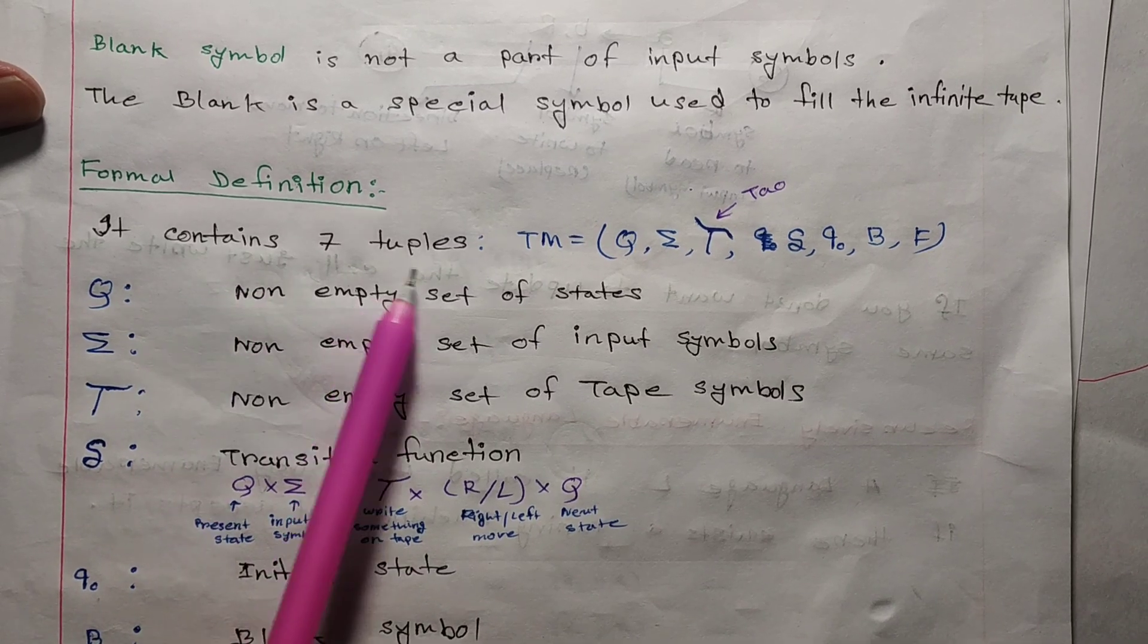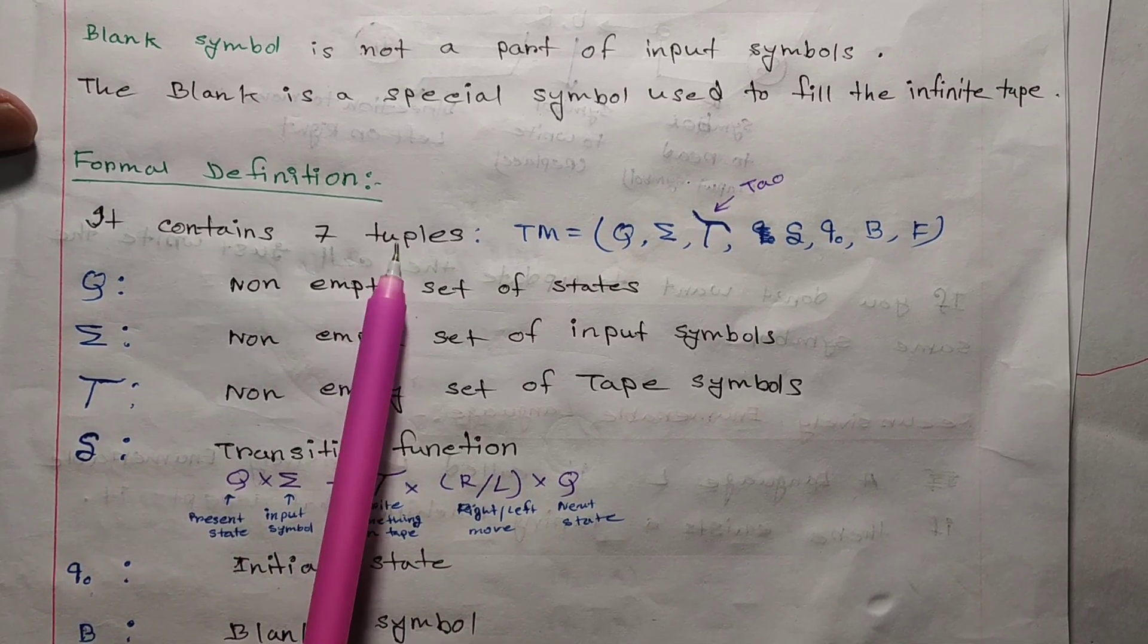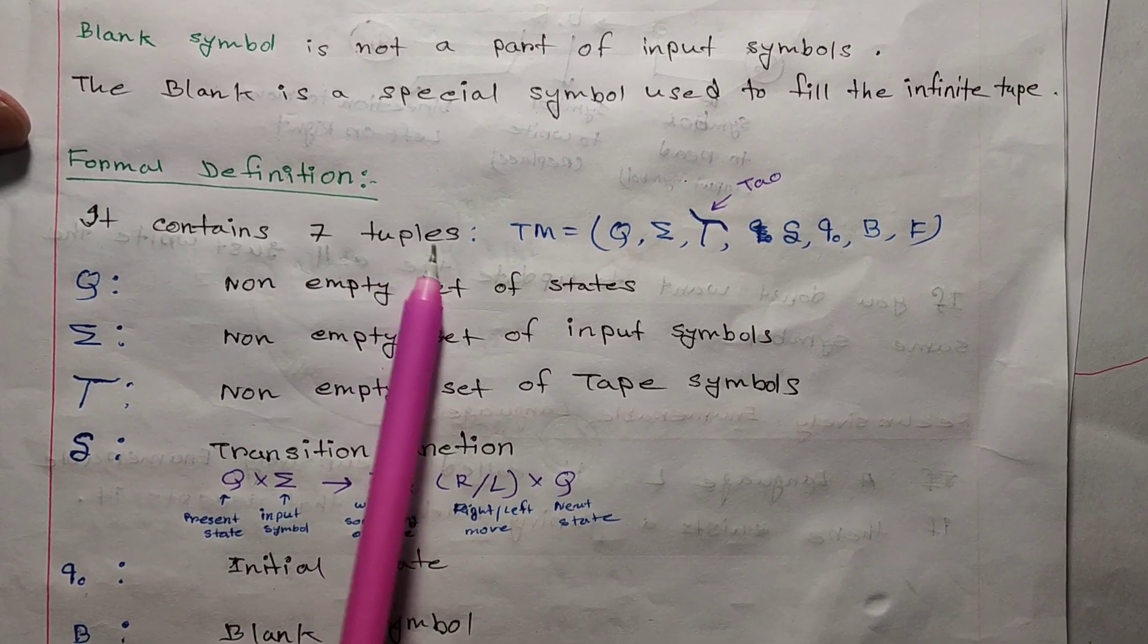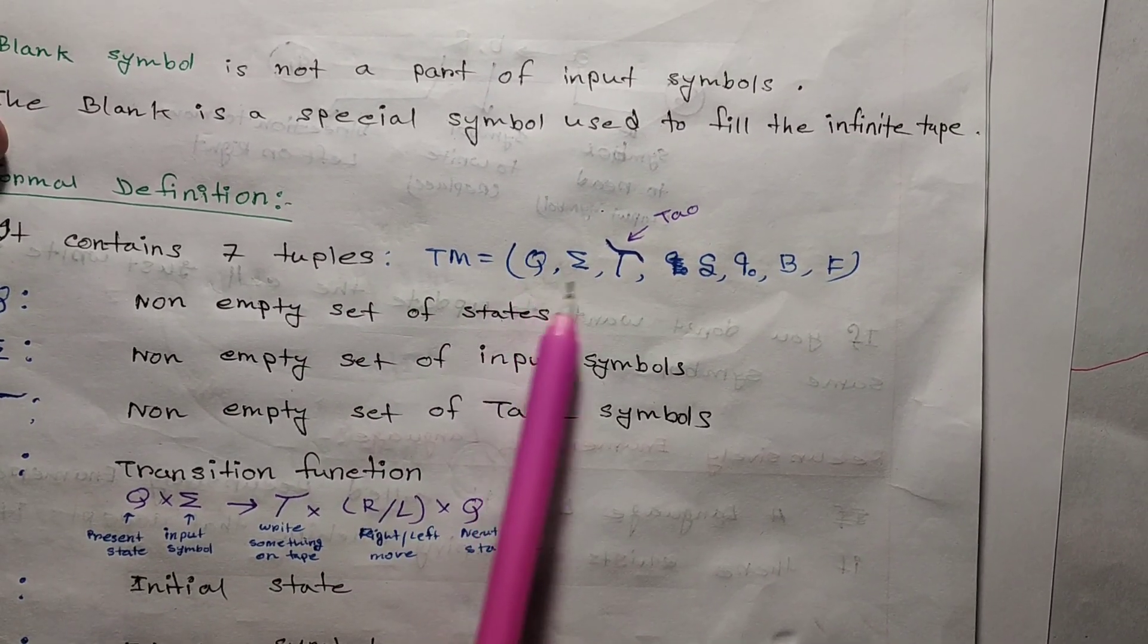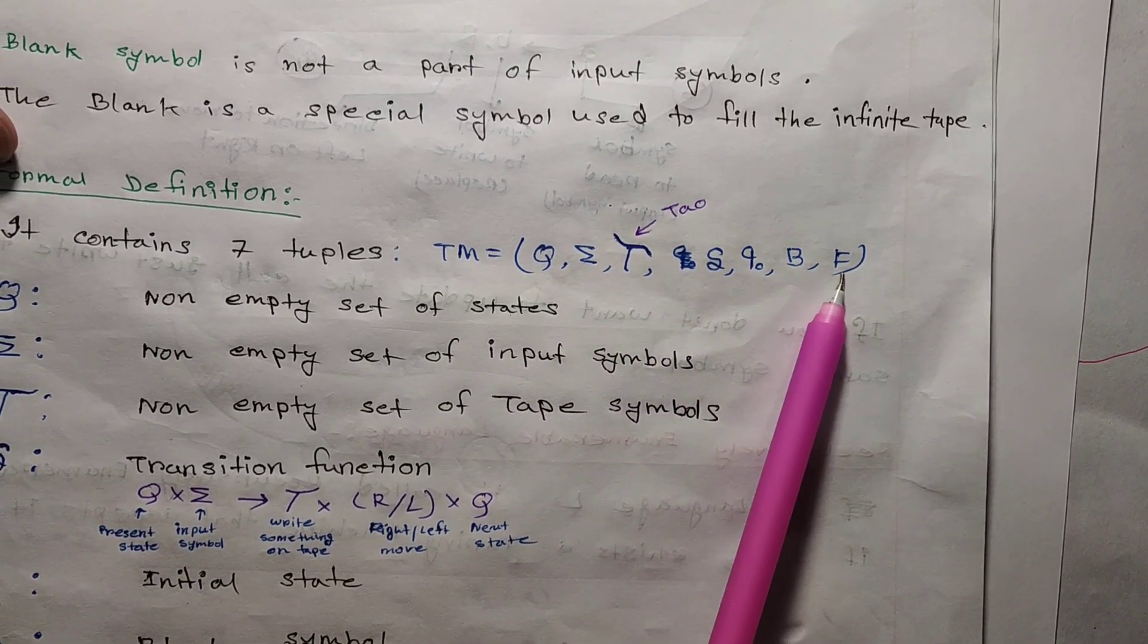Now the formal definition. A Turing machine has 7 tuples. These 7 tuples are Q, Σ, Γ, transition function δ, q0, B, and F.